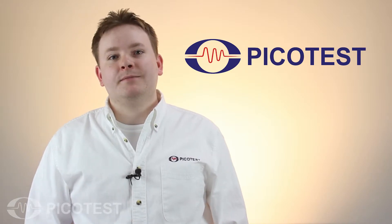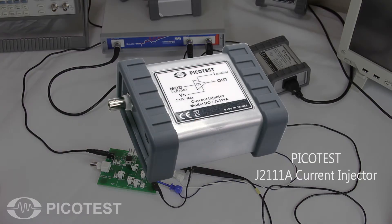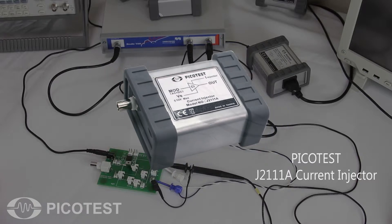The J2111A current injector is a unique voltage controlled current source that is capable of switching load currents up to 100 milliamps with 20 nanosecond rise fall times on positive and negative voltage regulators.